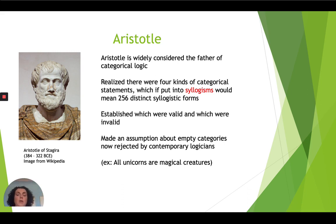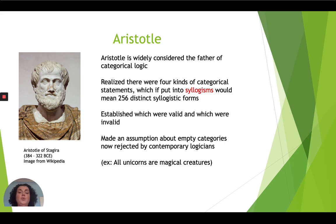We will discuss these four statements in more detail. If we put them into syllogisms — a syllogism being a special type of argument with exactly two premises and a conclusion — that gives us 256 distinct syllogistic categorical forms. Aristotle went through and established which were valid and which were invalid by brute force, which is quite the accomplishment. However, he made an assumption about empty categories that is now rejected by contemporary logicians.